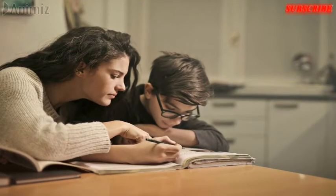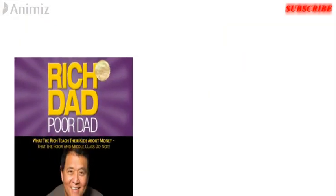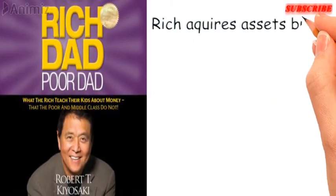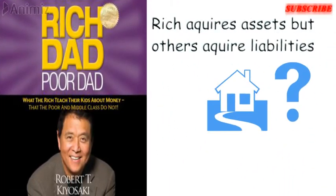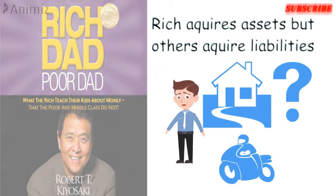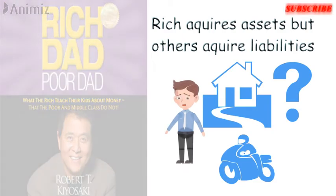However, parents are often reluctant to talk to their children about their finances, especially if they have debt or haven't always made the best financial decisions. In the book Rich Dad Poor Dad, the author states that rich people acquire assets, but others acquire liabilities they only think are assets, and that financial struggle often comes from a lifetime of working for someone else.